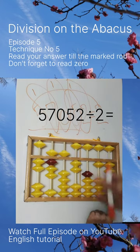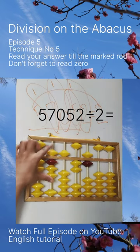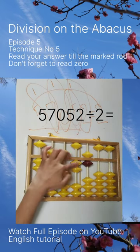Two sixes are twelve. Left side answer. Two sixes are twelve. We finished, and our answer is two eight five two six.